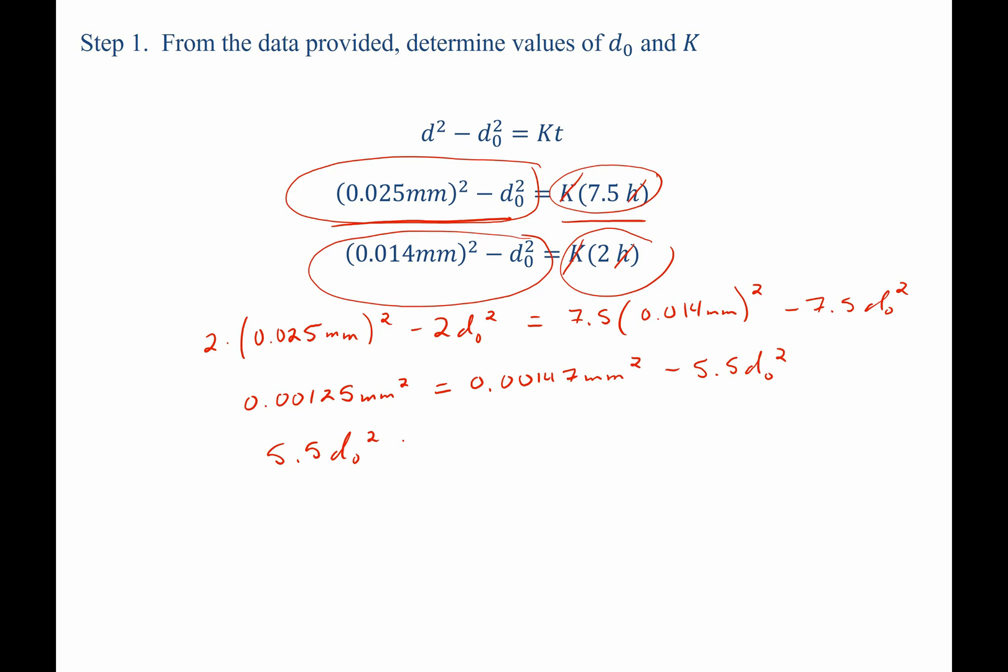Similarly, 5.5 d-naught squared is equal to 0.00022 square millimeters. Therefore, d-naught, our first grain growth coefficient that we need to solve for, is equal to 0.006325 millimeters.